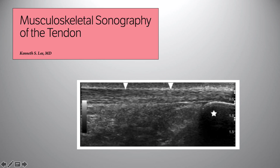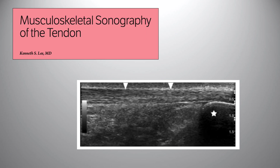On ultrasound, this pattern is seen as multiple tightly spaced echogenic parallel lines in a fibrillar pattern. This is the normal ultrasound appearance in grayscale in a 30-year-old man, showing these parallel echogenic lines in a fibrillar pattern that is uniform in size and echotexture. The star indicates the calcaneum. With any tendon, it's important to look in both planes — both the long axis and the short axis.